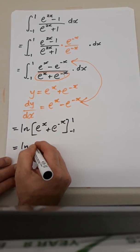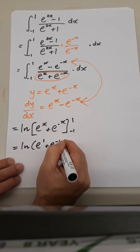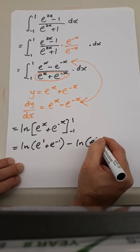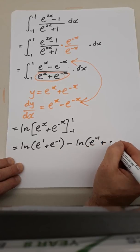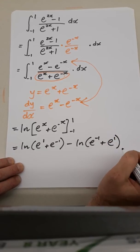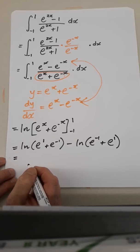Which is the natural log of e to the 1 plus e to the minus 1 minus natural log of e to the minus 1 plus e to the minus of minus 1, which is e to the 1. So, it's, let's see, we've got e to the 1.